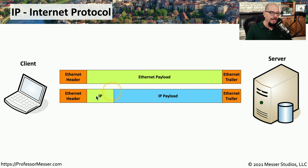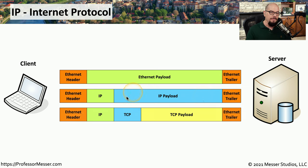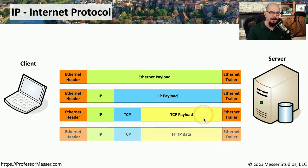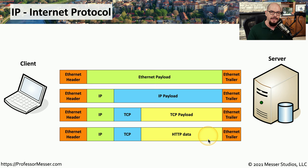That means we're going to have an IP header, and inside of that IP header will be the IP payload. The IP payload is more than just one large group of data — inside could be TCP or UDP data. In this particular example, it's TCP data, which means there'll be a TCP header and some TCP payload. Since we're sending information to a web server, that TCP payload holds HTTP data.